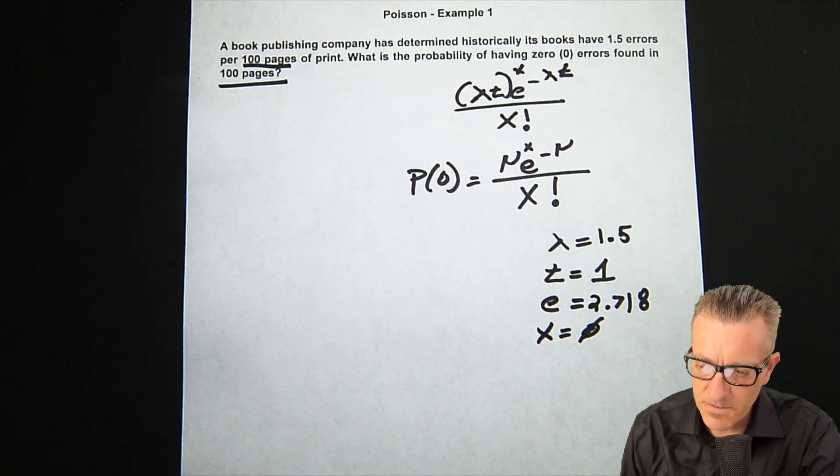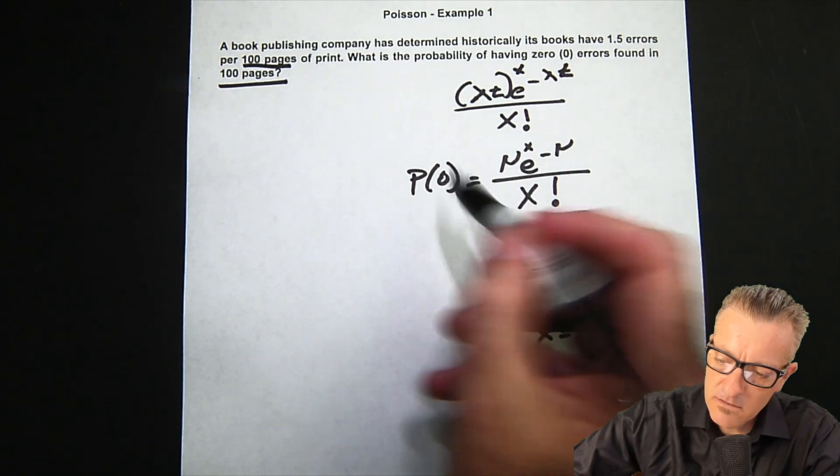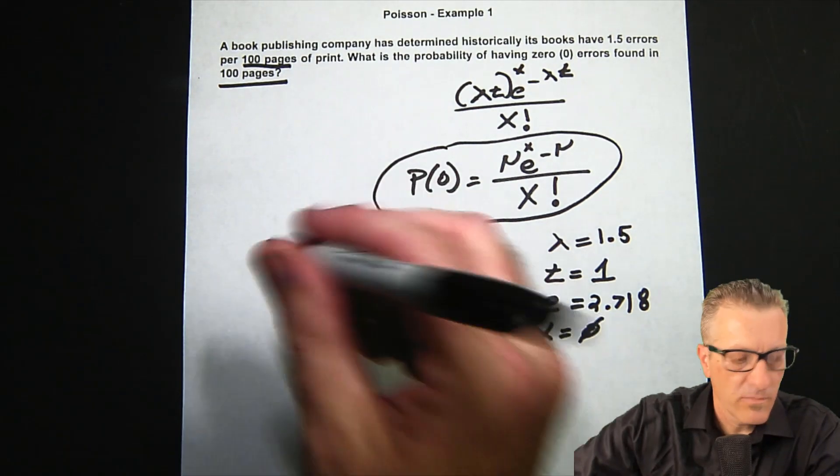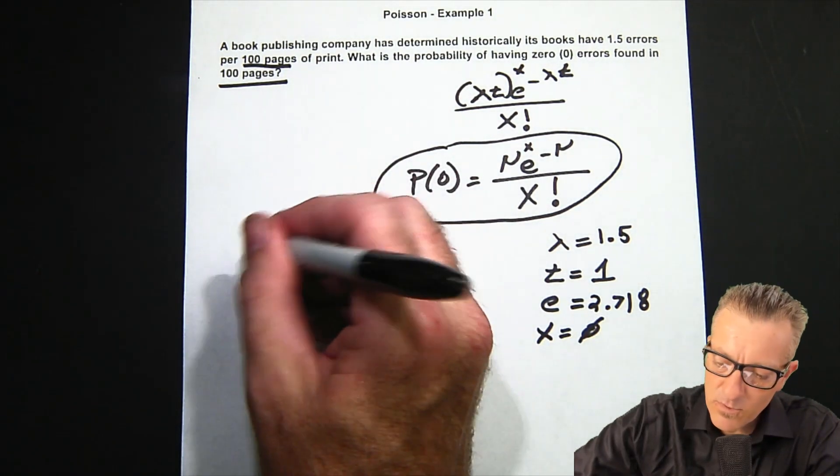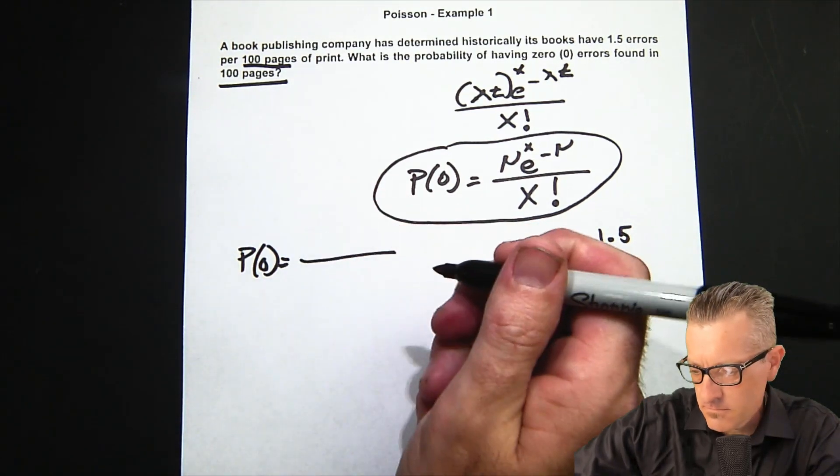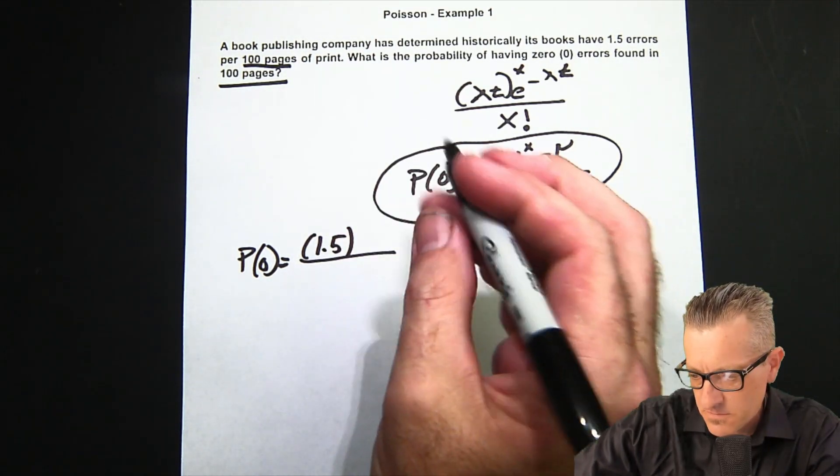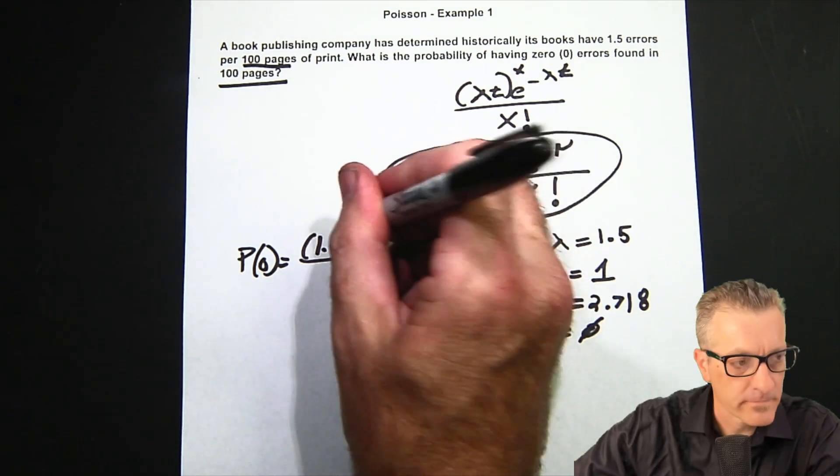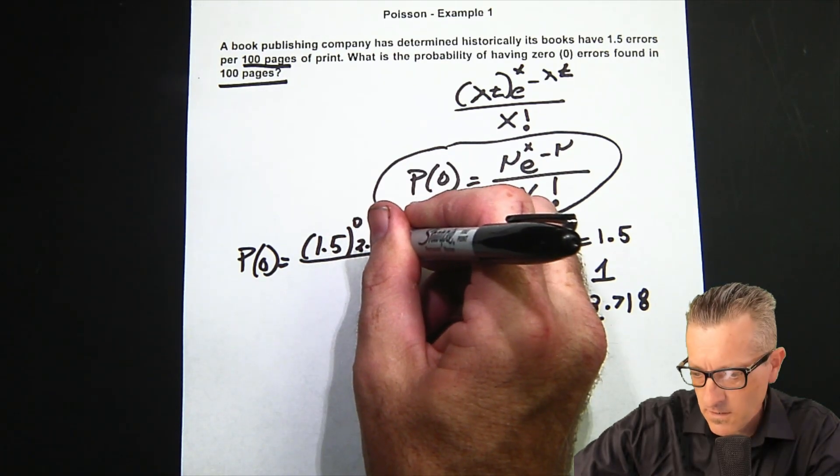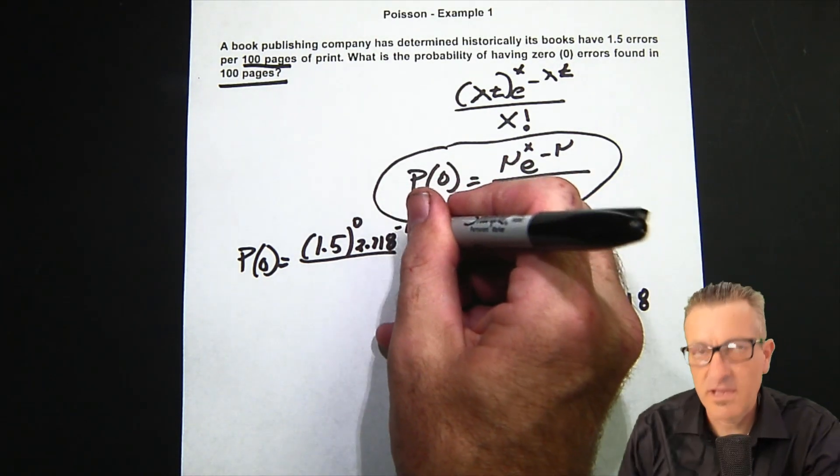So let's work this out. We're working out this formula right there. We'll plug everything in. When we plug everything in, we end up with—I'll show you how to do this on the calculator in just one second.